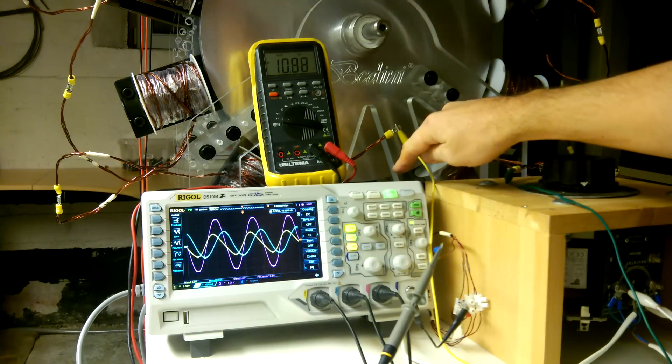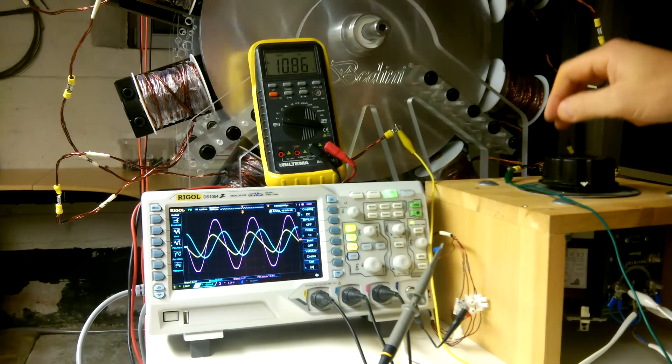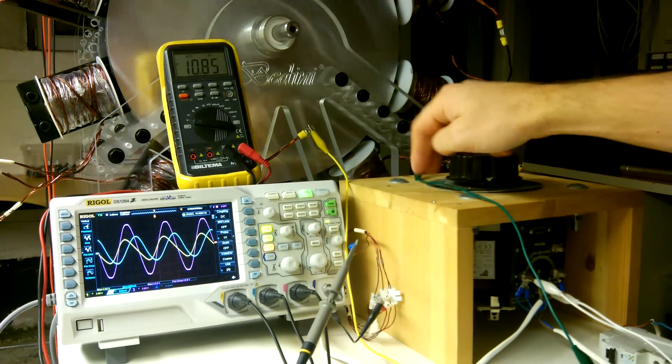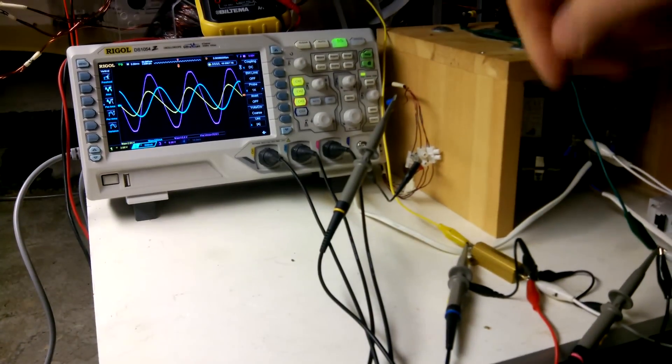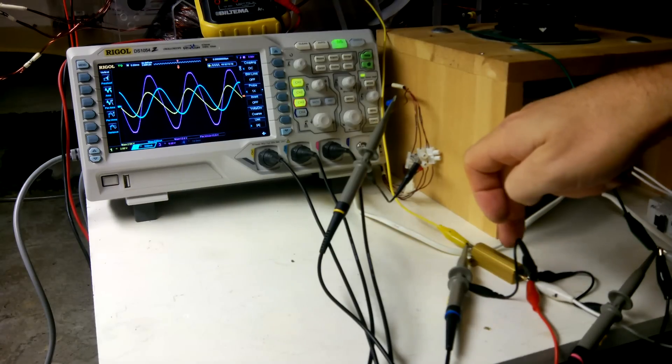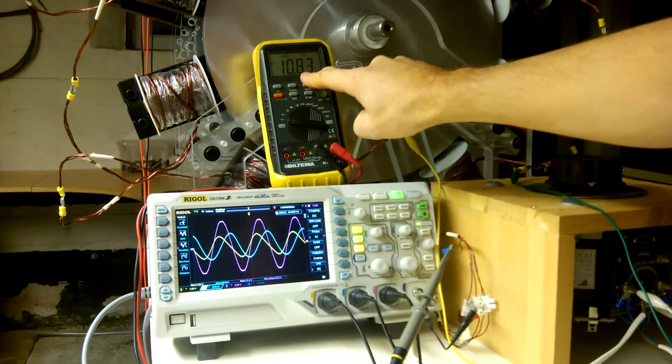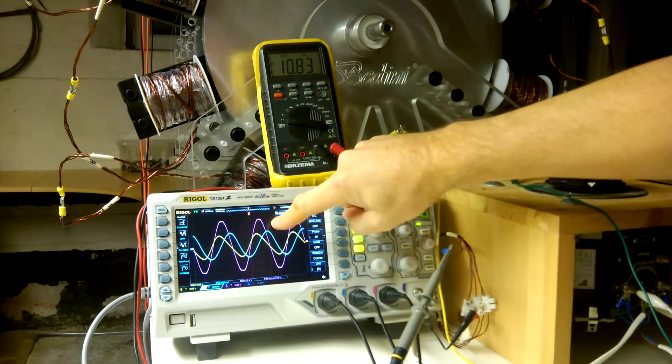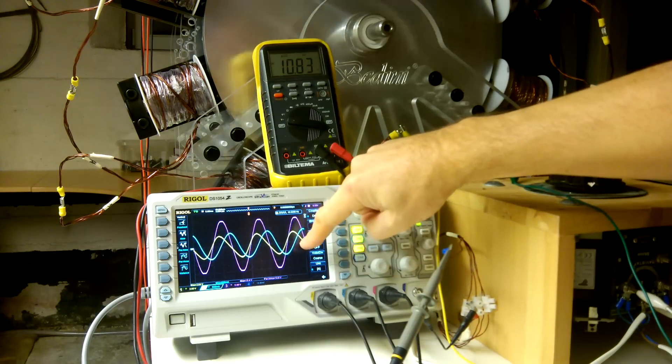Then I have this variable transformer as a source that I've connected to these nine coils, and I also have a one ohm resistor in series to show me the current. This is the output from the transformer, which is also the purple trace. The blue trace is the voltage across the resistor, so that's the current.